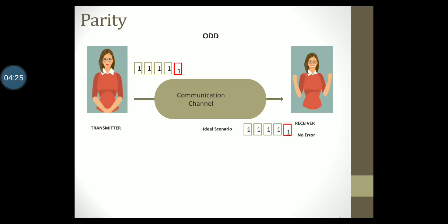Of course, this is an ideal scenario where there are no errors. Let's take a look at a situation where there is an error. What if the data that was sent gets distorted and it reaches the receiver like this? Notice that there is a change in a single bit. The receiver will count the number of ones in the data that is received and notices that it does not confirm to the odd parity system that was approved by both the sender and the receiver.